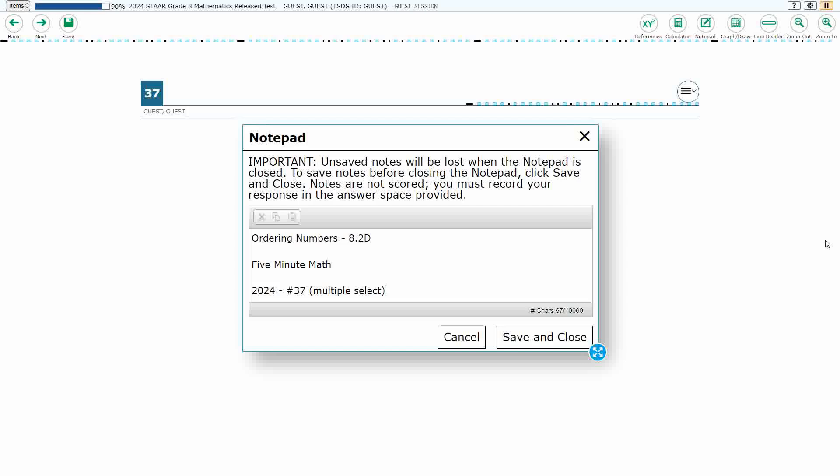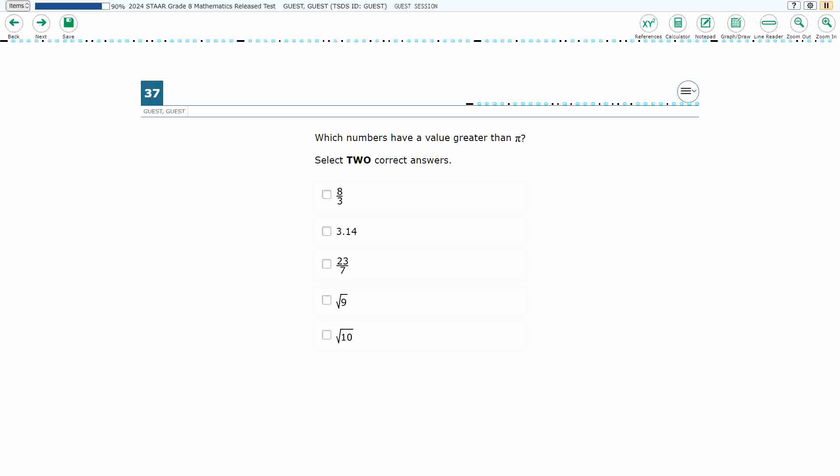Hello, and welcome to 5-Minute Math. Today we are looking at the 8th grade concept of ordering numbers. This is standard 8.2D in the great state of Texas, and we are using item number 37 of the 2024 released STAAR test.